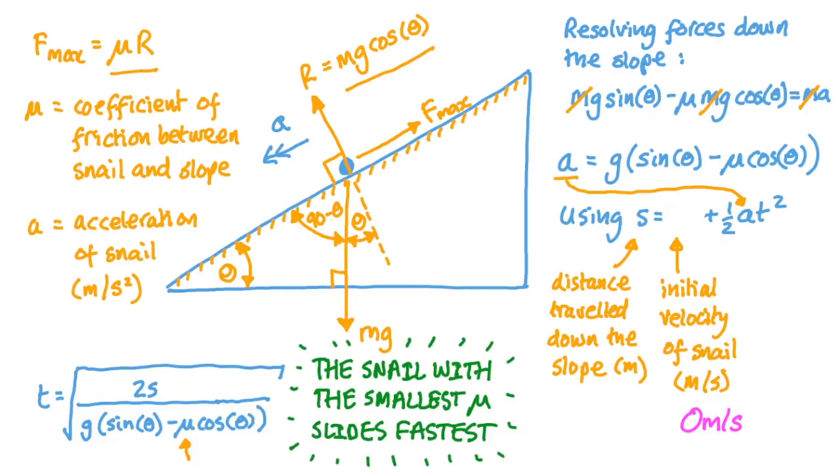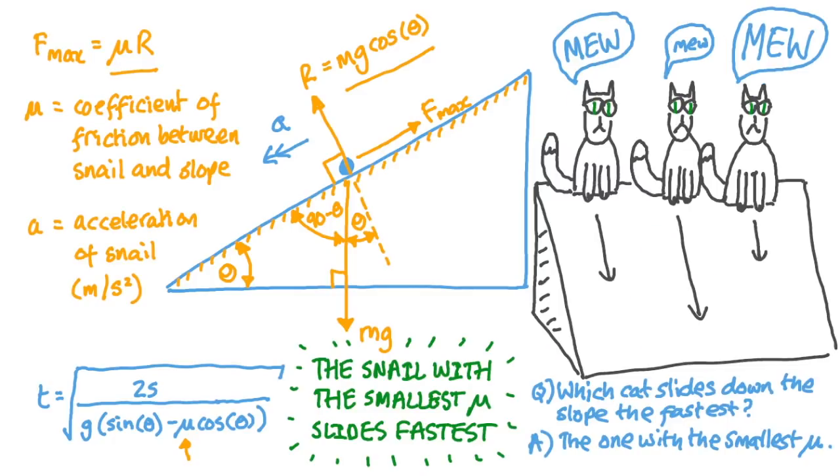Given that our physical slope looks something like this, we can see from the formula there that the snail with the smallest μ will slide down the ramp the fastest. Which reminds me of possibly the worst math joke of all time. Which cat slides down the slope the fastest? The one with the smallest μ. And on that note, I think we'd better move on to the main business of the day, the model snail racing problem.